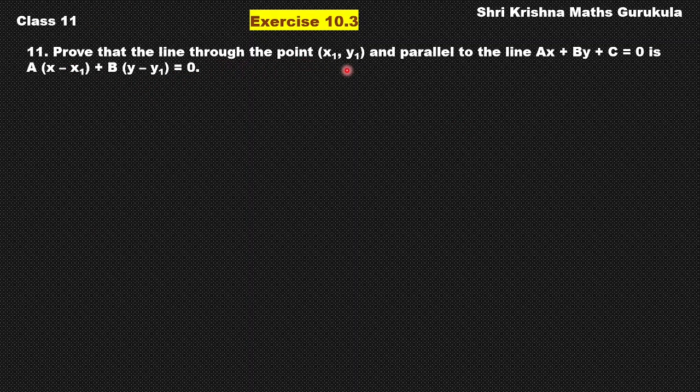Prove that the line through the point x1, y1 and parallel to the line Ax plus By plus C equal to 0 is A into x minus x1 plus B into y minus y1 is equal to 0. This is the question.